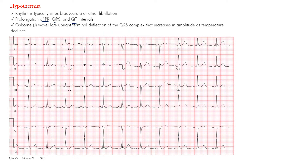The main thing to be aware of is that things slow down. Whether it's the arrhythmia — all become bradyarrhythmias — whether it's sinus brady, AFib with slow ventricular response, a slow junctional rhythm, or even an AV block. The intervals tend to get longer. The main feature is this Osborne wave: that upright terminal deflection at the J point, and it increases in amplitude as the temperature declines.